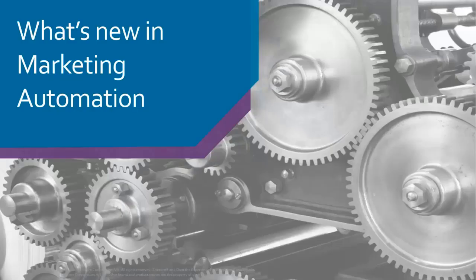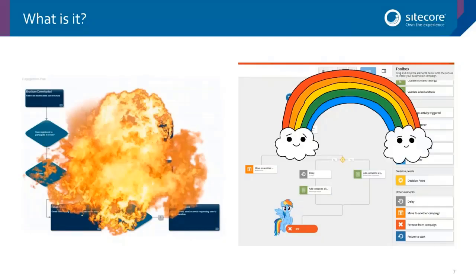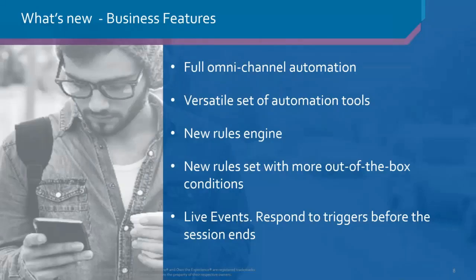You also get full flexibility in that you can host where you want and extend how you want. As a quick overview of what's new — this is not a reskin of the old stuff. This is a complete rebuild from the ground up, with a whole new engine and a whole new architecture, which really eliminates some of the issues that existed with automation in the past — how it interacted with email sends, and issues around scalability and reliability.